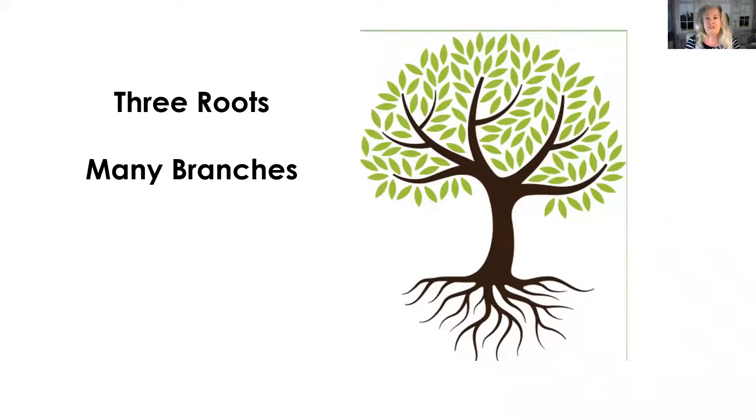But in Functional Nutrition, we go to the roots of the issues and we solve it in the roots, in the soil, in the environment that those symptoms are coming up in. Because what happens a lot if you try to squelch one symptom or two or three or all the symptoms, the branches just get bigger or new branches sprout. So again, that's the three roots and many branches approach.